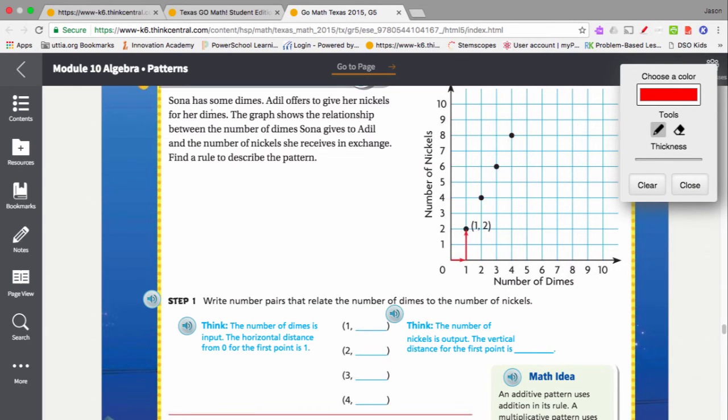Here's our situation. Sona has some dimes. Adil offers to give her nickels for her dimes. The graph shows a relationship between the number of dimes Sona gives to Adil and the number of nickels she receives in exchange. So we'll call this the number of nickels on the y-axis of the graph. Remember, this is y. And the number of dimes on the x-axis of the graph. And we want to find a rule that describes this pattern.